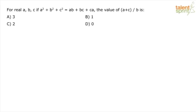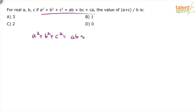For real values of a, b, and c, if a squared plus b squared plus c squared equals ab plus bc plus ca, what is the value of (a+c)/b? The condition is that a² + b² + c² should equal ab + bc + c. If you are a smart student who has practiced substitution, you would know that a, b, c all three are equal — only then is this possible.